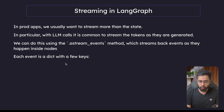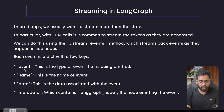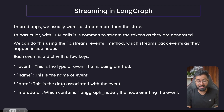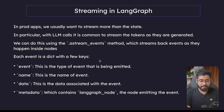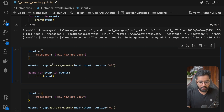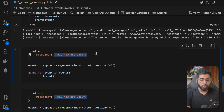Each event is a dictionary with a few keys: 'event' (the type of event being emitted), 'name' (the name of the event), 'data' (the data associated with the event), and 'metadata' (information about which particular node emitted that event). Let's put this method to use. I'm using a simple message — 'Hi, how are you?' — without any tool calls for now. I'm calling app.astream_events, passing in the input. This takes a version argument — I'll use the latest version — and I'll loop through all events and print them. Make sure to use async since this is an asynchronous operation.